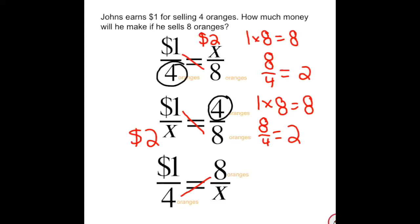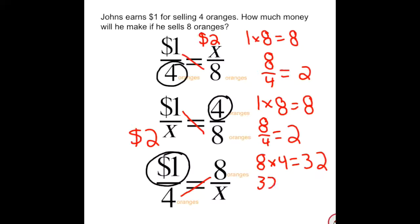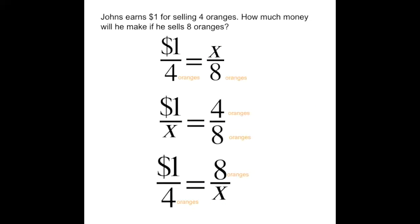Using cross multiply and divide: we have eight times four, which is equal to 32. We take this 32 and divide by the only thing we have left, which in this case is a one. So 32 divided by one is equal to 32. We know that's not correct — he's not selling eight oranges for $32. So the first two worked, and this third one didn't.